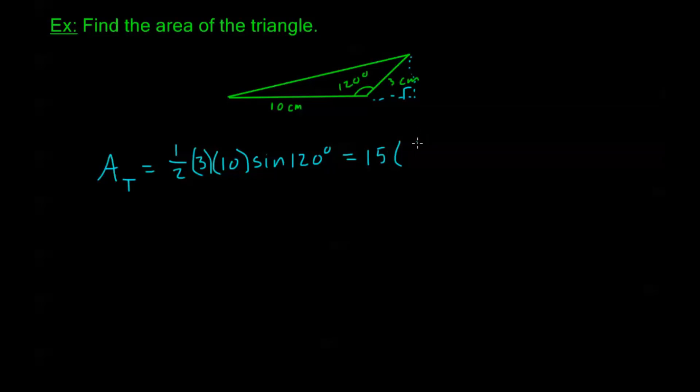Recall that sine of 120 degrees. I have a reference angle of 60. This is still positive. So this is going to be the square root of 3 over 2. And we're done. The area of this triangle is 15 root 3 over 2 centimeters squared.